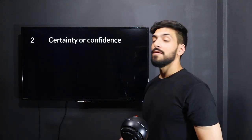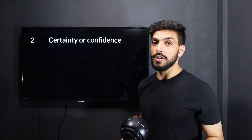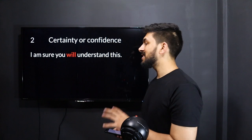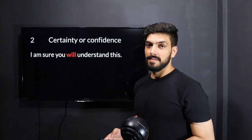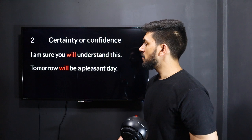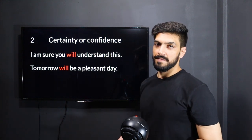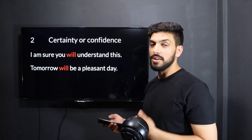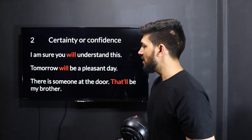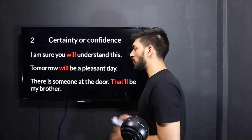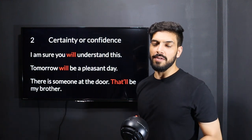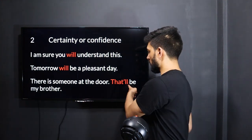The second use of will is certainty or confidence — that means you're sure about something. For example: 'I'm sure you will understand this.' 'Tomorrow will be a pleasant day' — you're sure about it because today was a bad day. 'There's someone at the door — that'll be your brother' — you know for sure, so you use will.